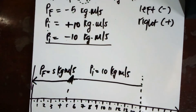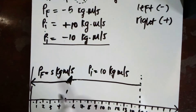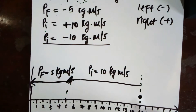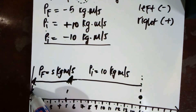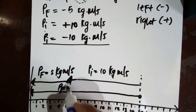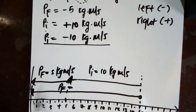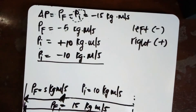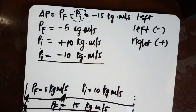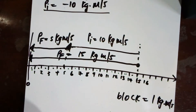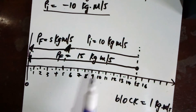To find the resultant, the change in momentum Δp, we draw it from the tail of the first vector pi to the head of the last vector pf. Counting the number of blocks, you find Δp spans 15 blocks and faces left — so Δp = 15 kg·m/s to the left. This graphically confirms our earlier algebraic calculation. Working with vectors is tricky, so please practice and re-watch if needed.